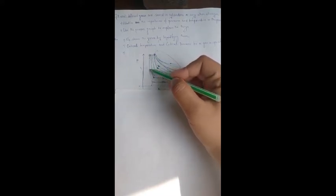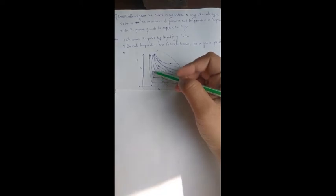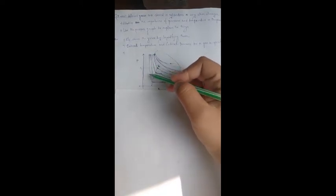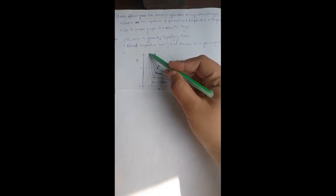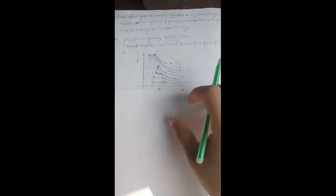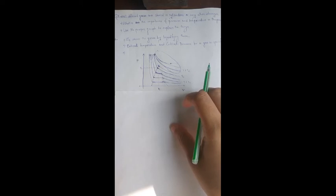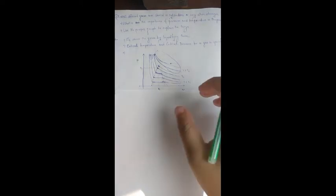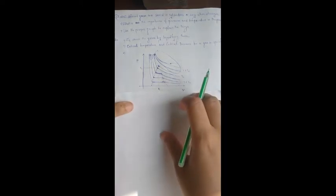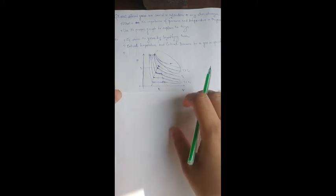We can see the parallel part of the graph with the P axis. That says the volume of the gas never changes after liquidification. That is, it comes to the liquid phase. And it completes the whole answer for the question.